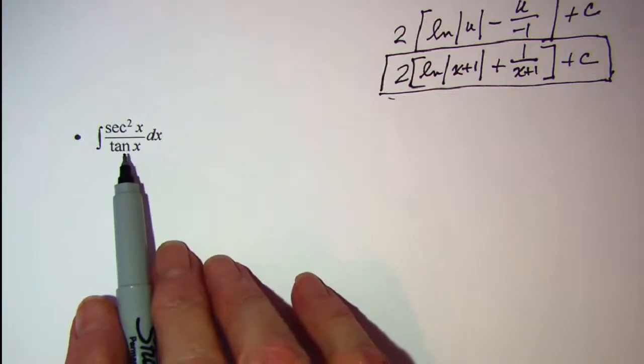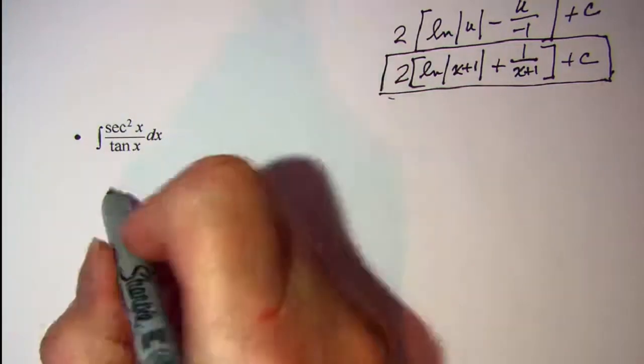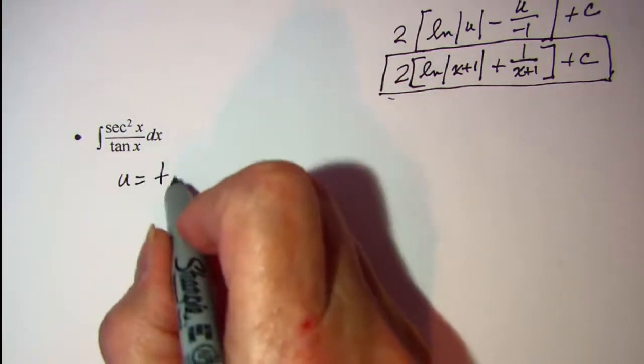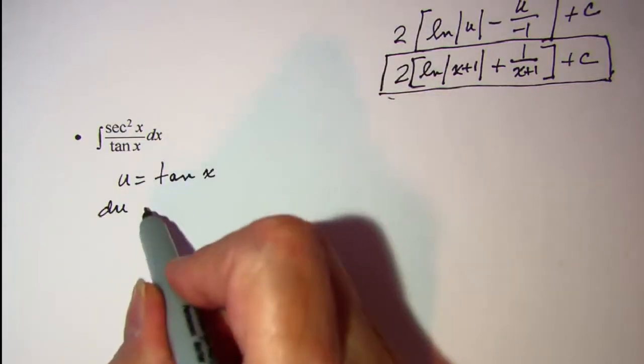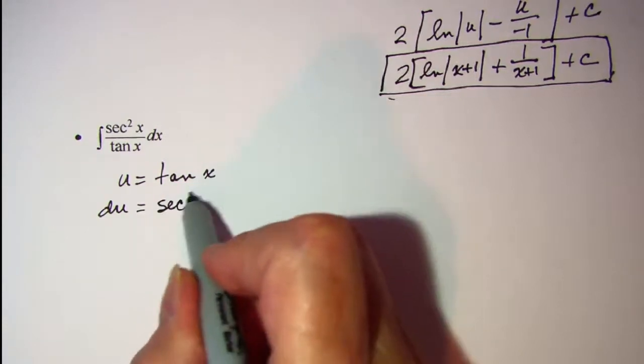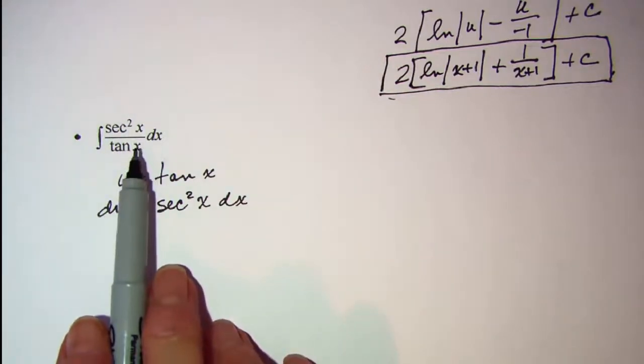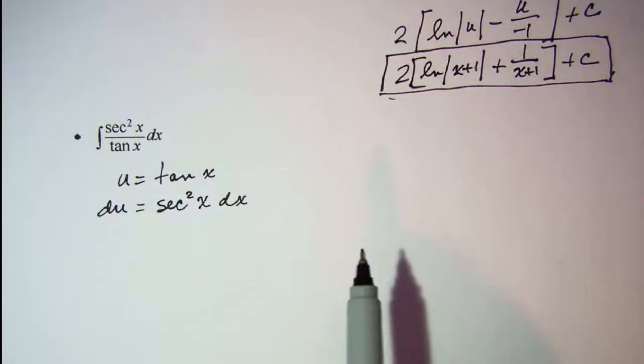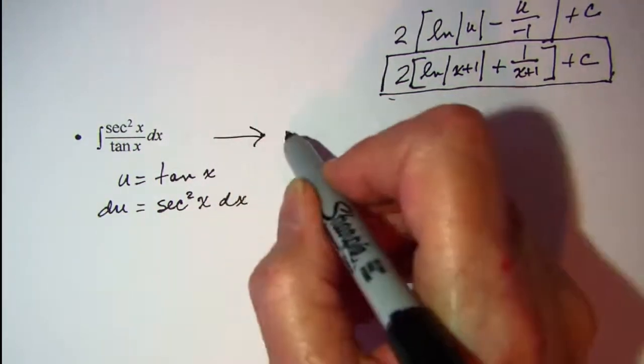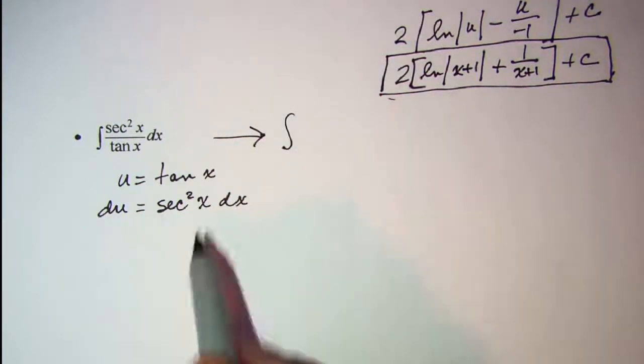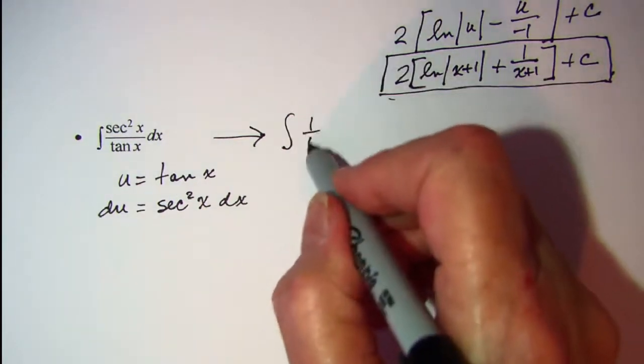Now keep in mind that the derivative of tangent is secant squared. So I'm going to let u equal tangent x. Then my derivative is secant squared x dx. So look for the derivative in your problem to see how to approach the problem. So now what I'm doing is integrating, this secant squared times dx is just my du. So I have 1 over u du.